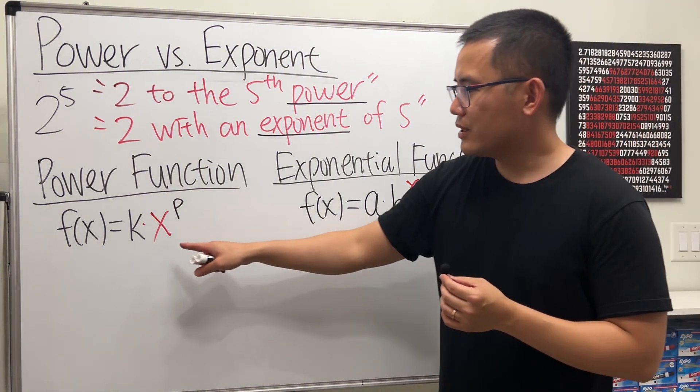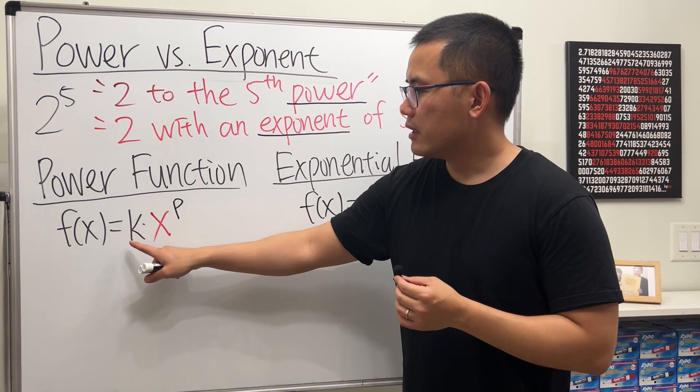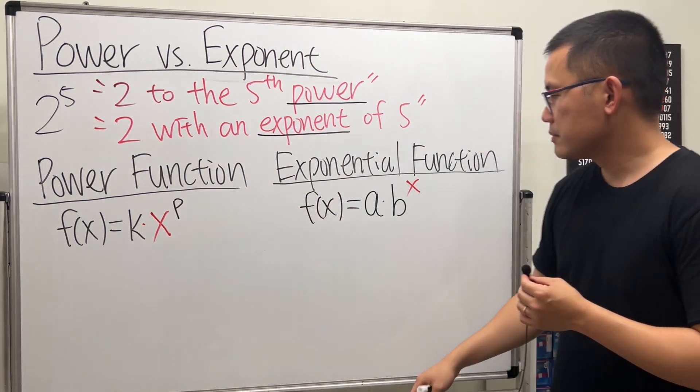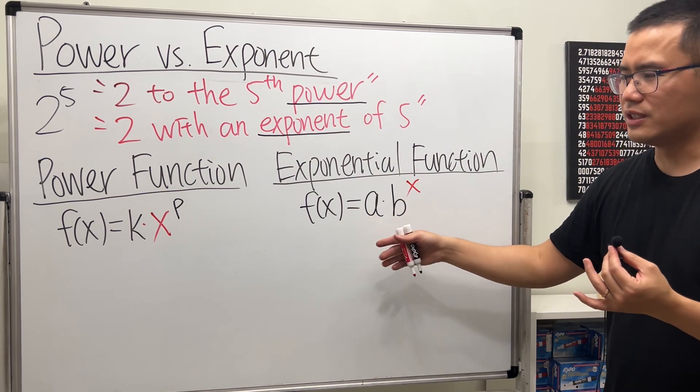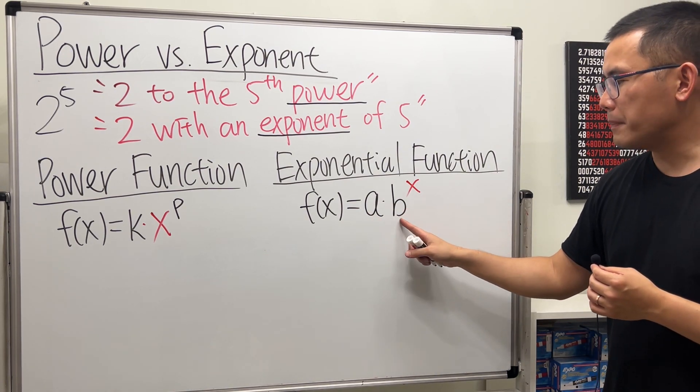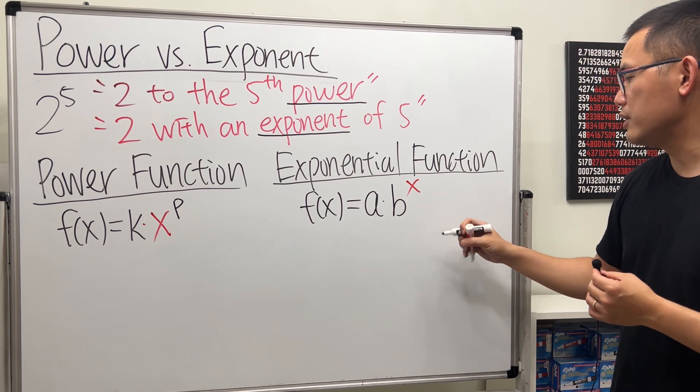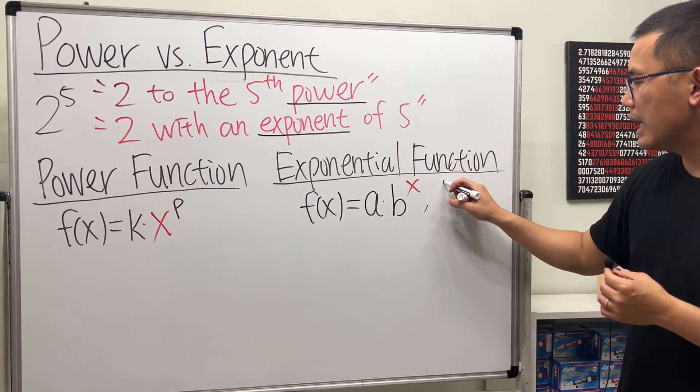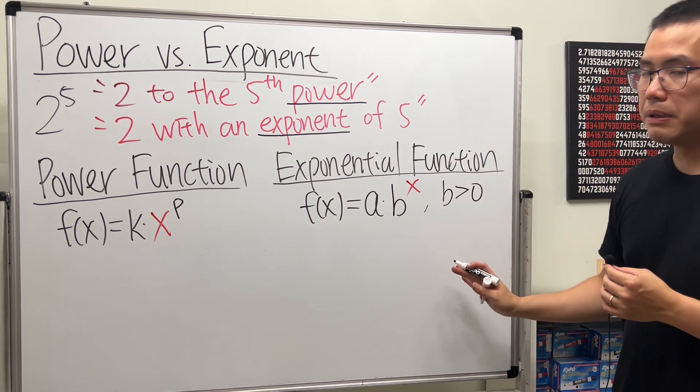And in fact, I can tell you guys a few things more. k and p can be anything here. But here, a can be anything, except for 0, otherwise it's too boring. But b, there's a condition for that. Well, there are two conditions. We want to make sure that b is positive.